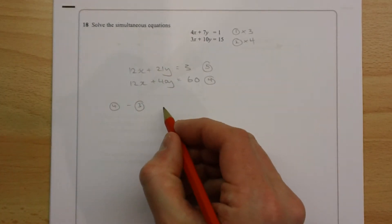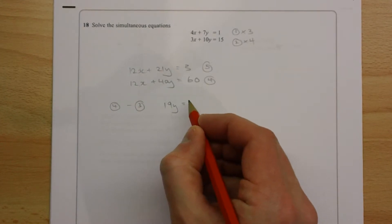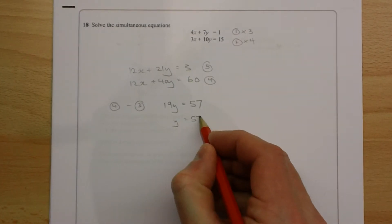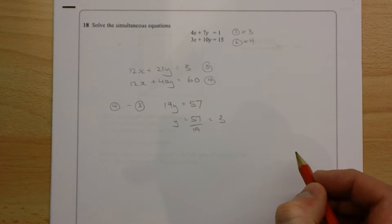40y take away 21y is 19y. 60 take away 3 is 57. And if we divide through by 19, there are exactly 3 19s in 57, so y is equal to 3.